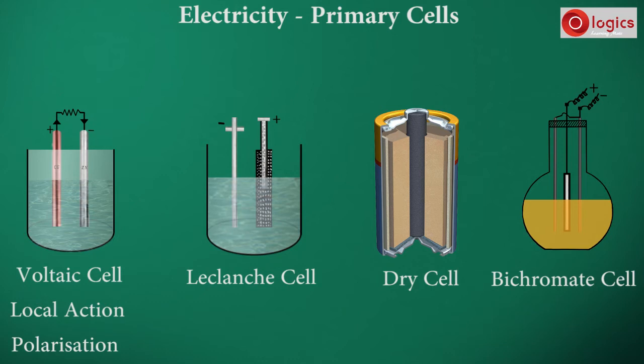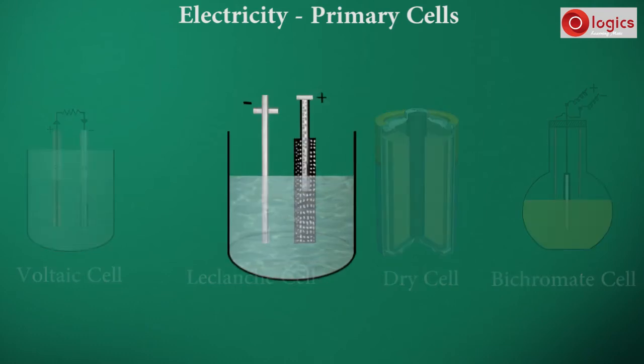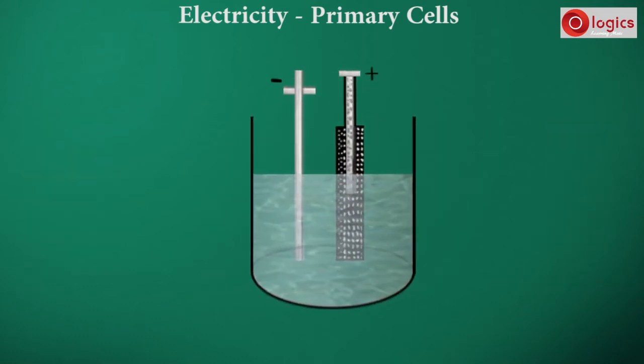These defects are overcome by Leclanché cell. It is of two types: the wet Leclanché cell and the dry Leclanché cell. This is the wet Leclanché cell, developed by Leclanché Georges in the year 1865.